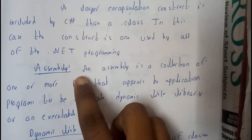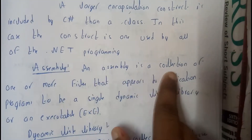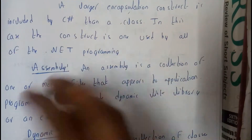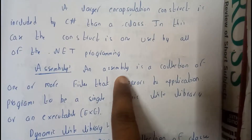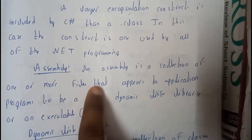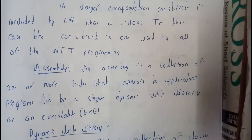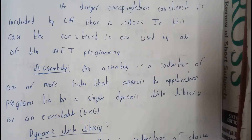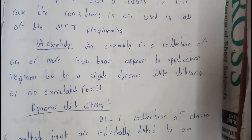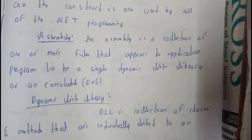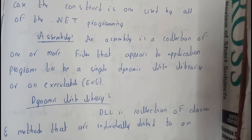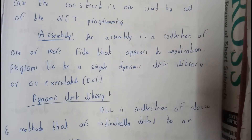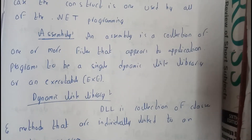So what is assembly? An assembly is a collection of one or more files that appears to application programs to be a single dynamic link library or an executable file — that is nothing but a .exe file. So that is what the assembly will be doing.